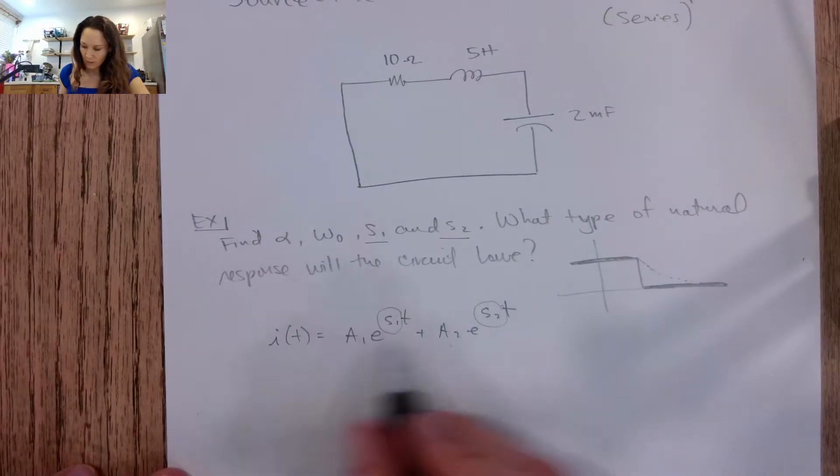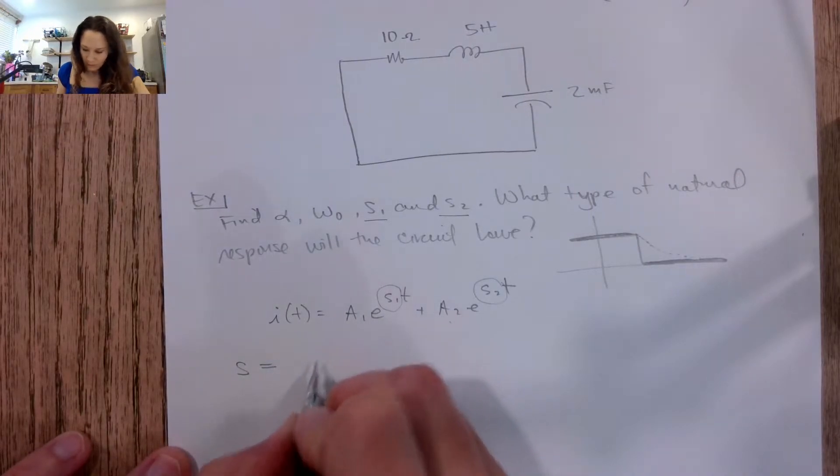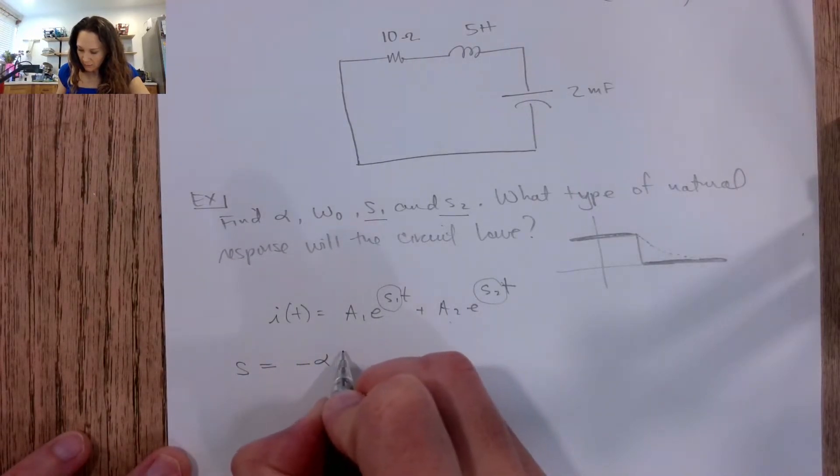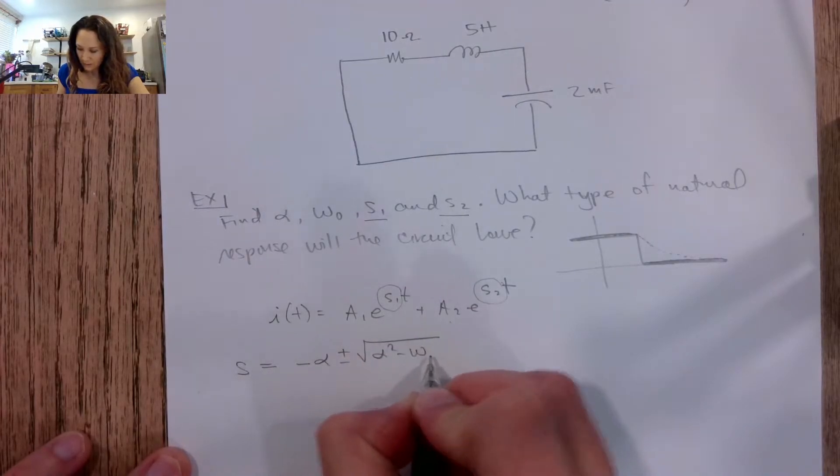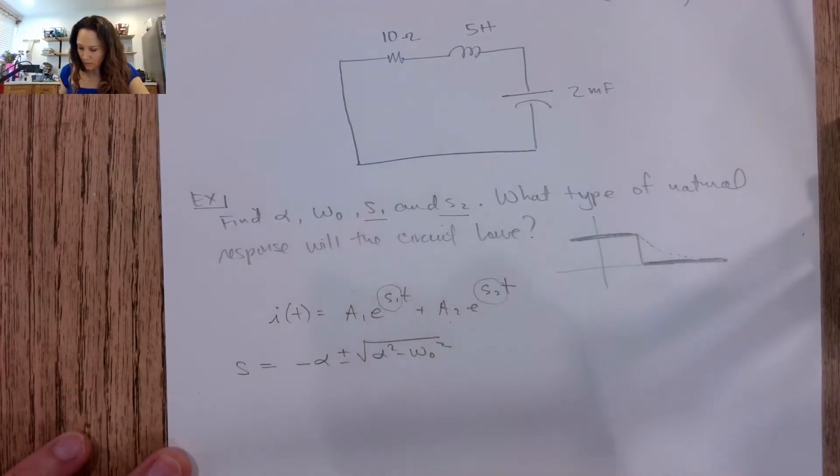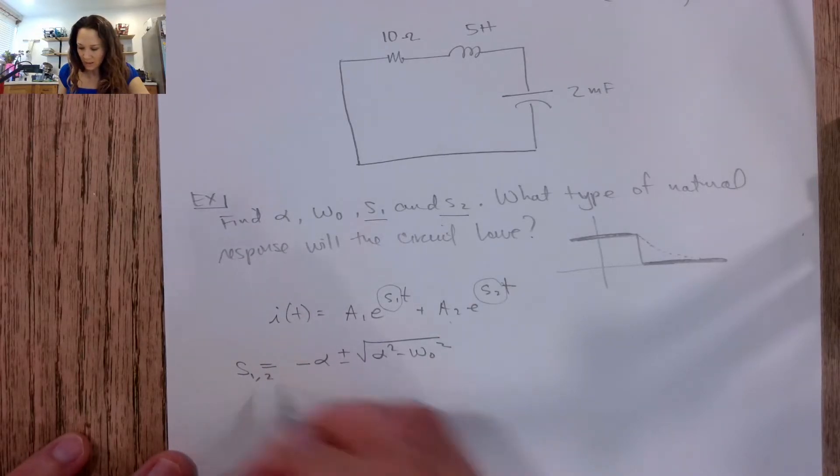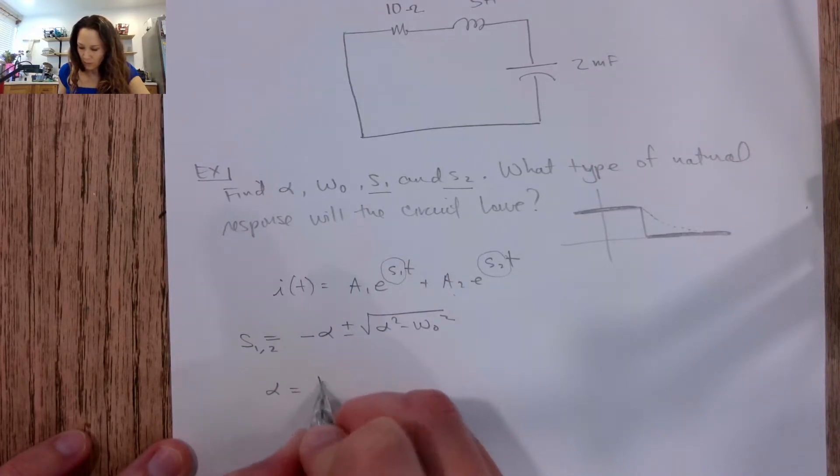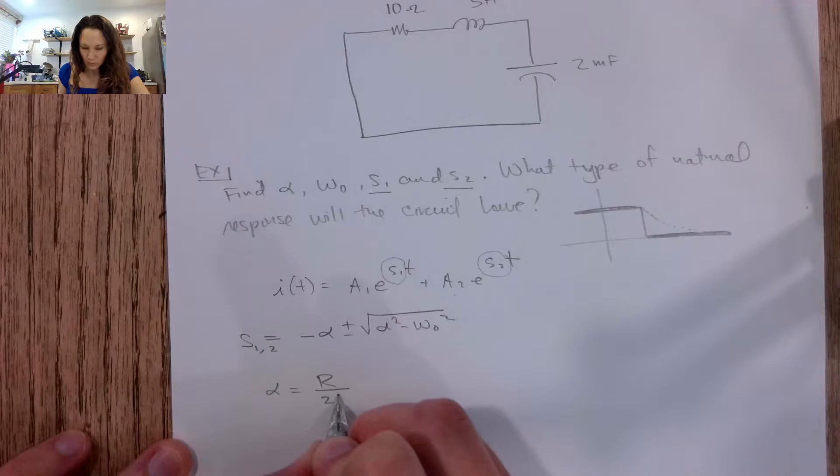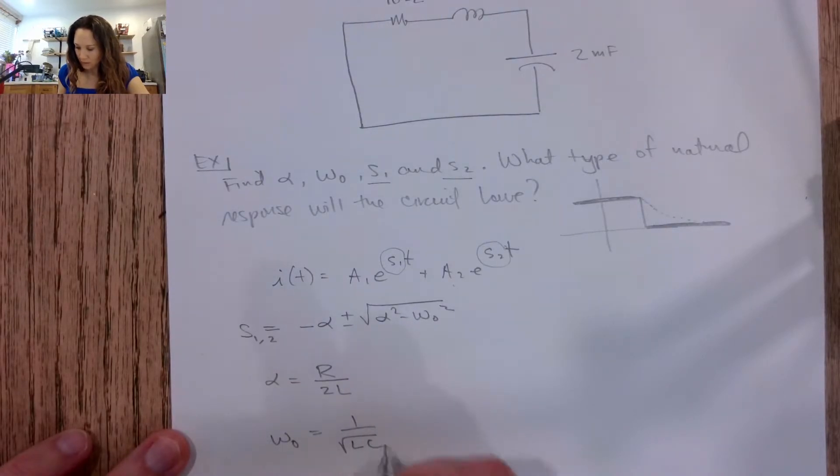Okay, great. So to find S1 and S2, our formula is negative alpha plus or minus the square root of alpha squared minus omega naught squared. So we have two solutions here because of this plus or minus, so this will give us S1 and S2. But then the definition of alpha, if you recall, is R over 2L, and the definition of omega naught is 1 over root LC.